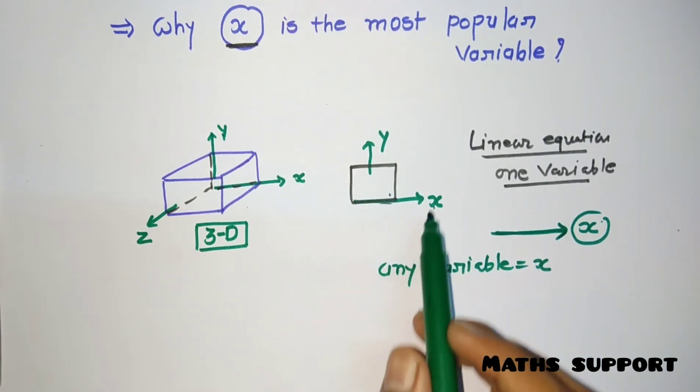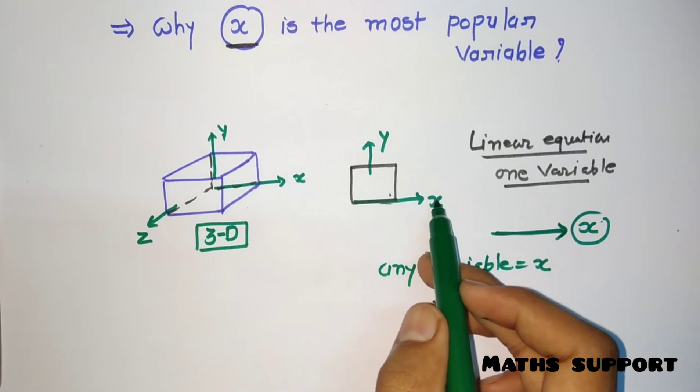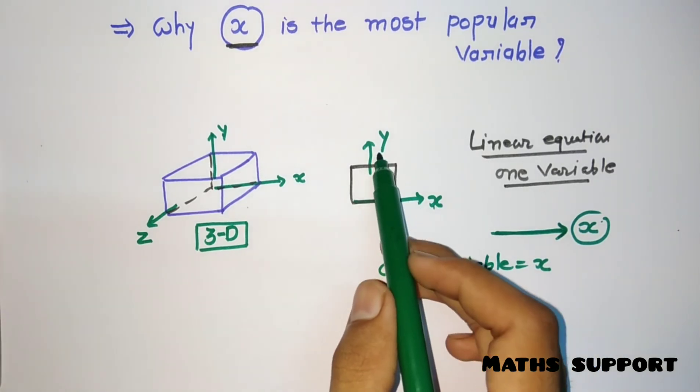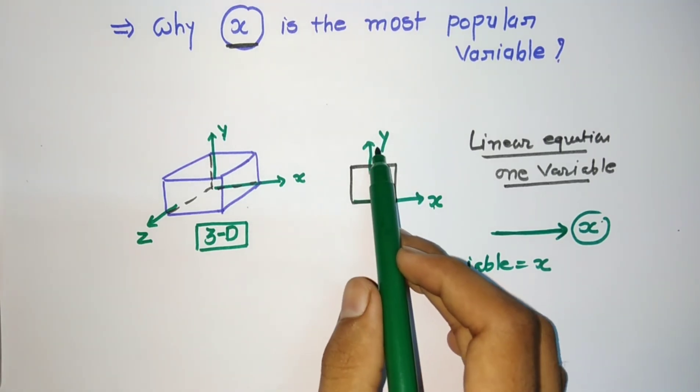If you are discussing quadratic equations, for the quadratic equation we are giving the function value as Y. So for two variables we are using X and Y. That means Y is the second most popular variable in mathematics.